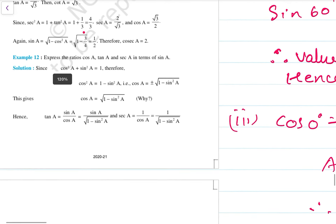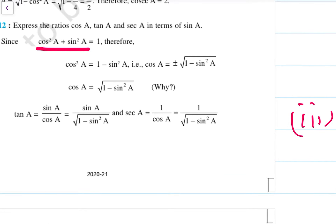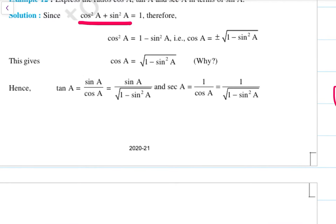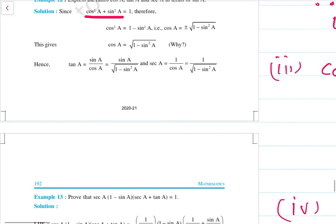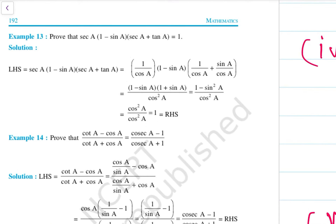Let us see the example. Express cos A, tan A, and sec A in terms of sin A. We know cos²A + sin²A = 1. Therefore cos²A = 1 − sin²A, which is an identity. So cos A = ±√(1 − sin²A), and since we consider the positive value, cos A = √(1 − sin²A). We have now expressed each of the given ratios in the form of the asked ratio.